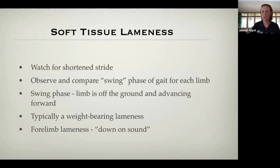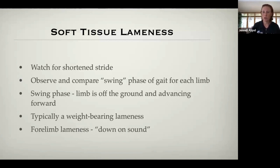For soft tissue lameness specifically, here are a few hints to help determine soft tissue versus joint. One of those is a shortened stride. You don't typically get a three-legged lameness like you would with a cruciate rupture — for soft tissue injury, you'll often see simply a shortened stride. We call this the swing phase: when the limb is pulled off the ground and advanced forward as the dog walks or trots. Comparing right to left, the swing phase will be shortened on the affected limb. Slow motion video helps determine this as well.